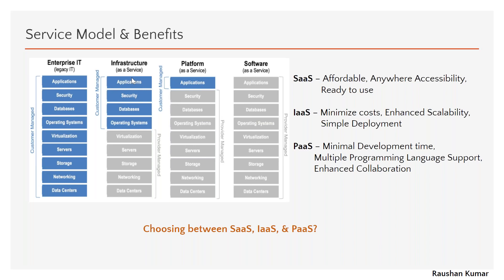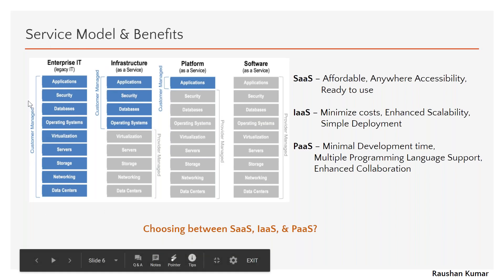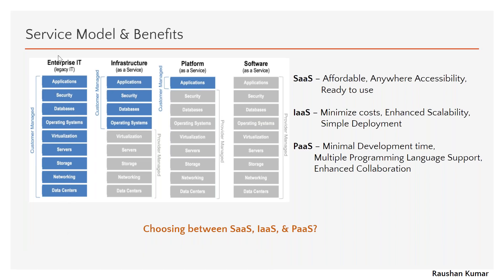With Infrastructure as a Service, you get control over a lot of resources — the operating system, databases, security, and applications. But the underlying hardware, data center, servers, storage, and virtualization are managed by AWS or the cloud provider. On-premises, you manage everything: purchasing land, building the data center, setting up infrastructure, then deploying applications. That's the difference between on-prem and cloud.